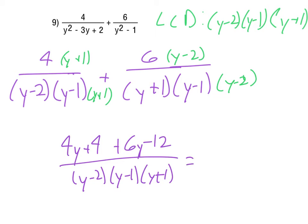Now we can, in the numerator, combine our like terms. So we get 10y minus 8. And that goes over the y minus 2, y minus 1, y plus 1. Now, notice that the numerator does factor. That 10y minus 8 would factor down. If we were to factor it though, all we can do is take a 2 out of that. And so we end up with 2 times 5y minus 4.